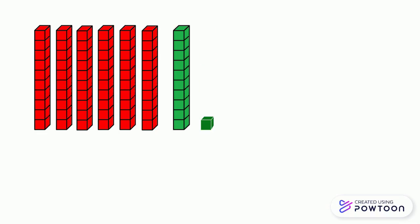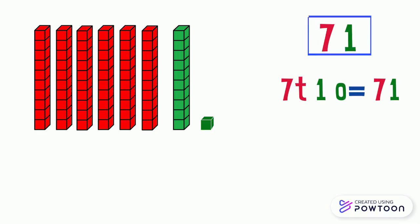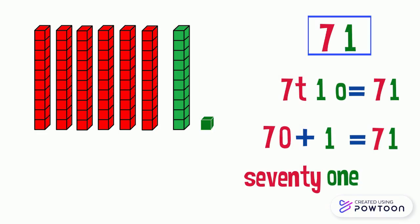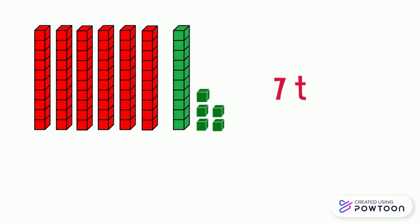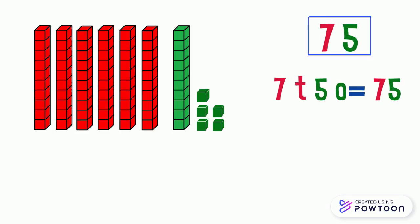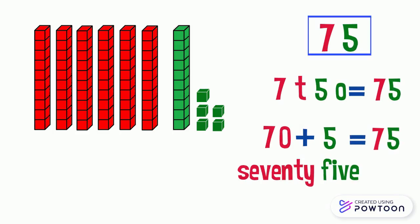Now we have 7 tens and 1 one — it represents the number 71. 70 plus 1 equals 71. Now there are 7 tens and 5 ones — it represents the number 75. 70 plus 5 equals 75.